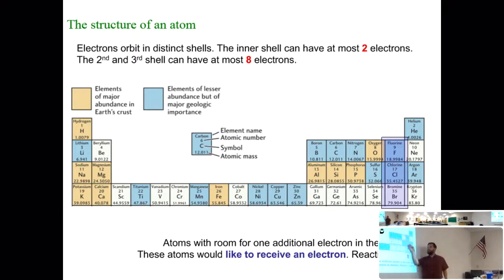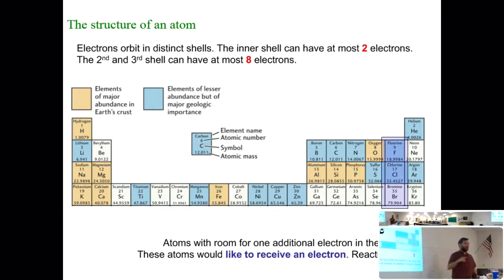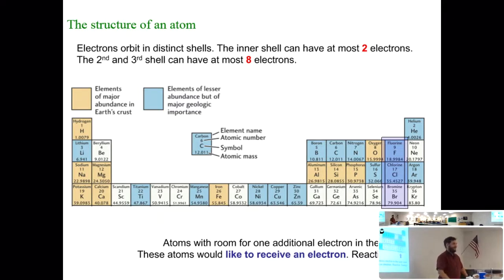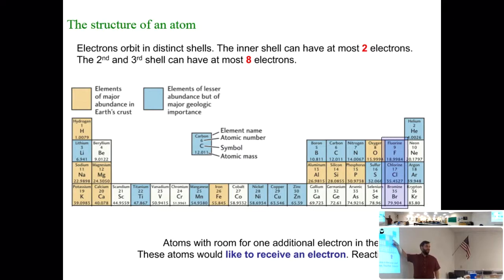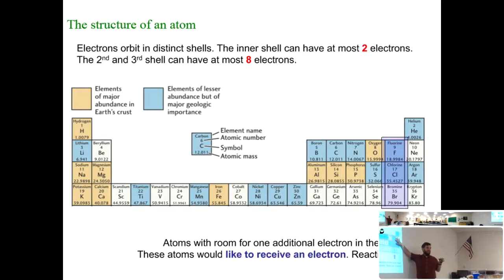Fluorine is very, very reactive. In fact, fluorine is one of the few things that will actually react with glass — it's so reactive it'll tear glass apart. Fluorine, chlorine, bromine — these are all halogens and extremely reactive.